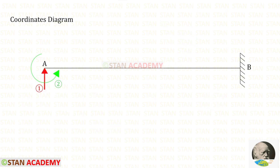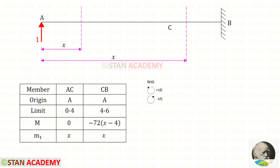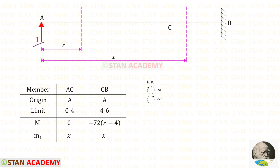Now we are going to find the moment M1. For the first coordinate direction we apply a unit load. Our first coordinate is Ra, so we apply unit load in the direction of Ra. Up to both sections we have only the unit load, which acts in the clockwise direction — so it will be positive. For both sections the moment arm is X, so 1 times X gives M1 = X.